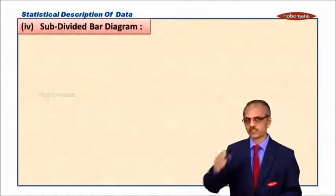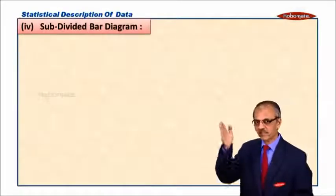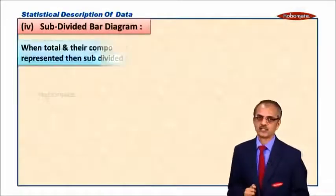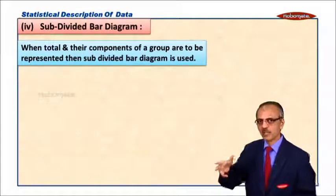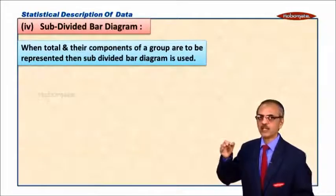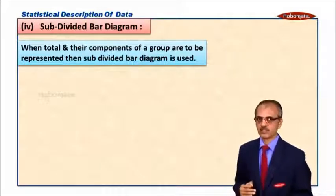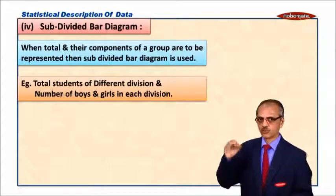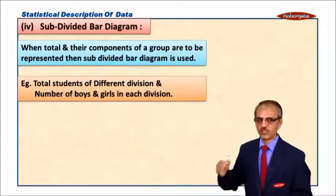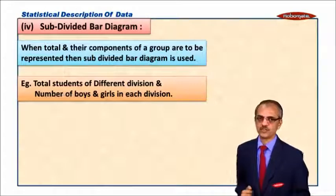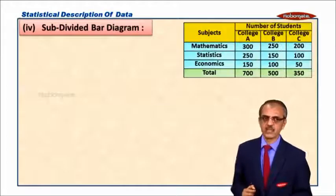Now the next one, the fourth one, is subdivided bar diagram. Bar is divided into subdivided groups. When total and the components of a group are to be represented, then such bar diagram is called subdivided bar diagram. You know the total students of different divisions and the number of boys and girls in each division. Now let us take a simple example.